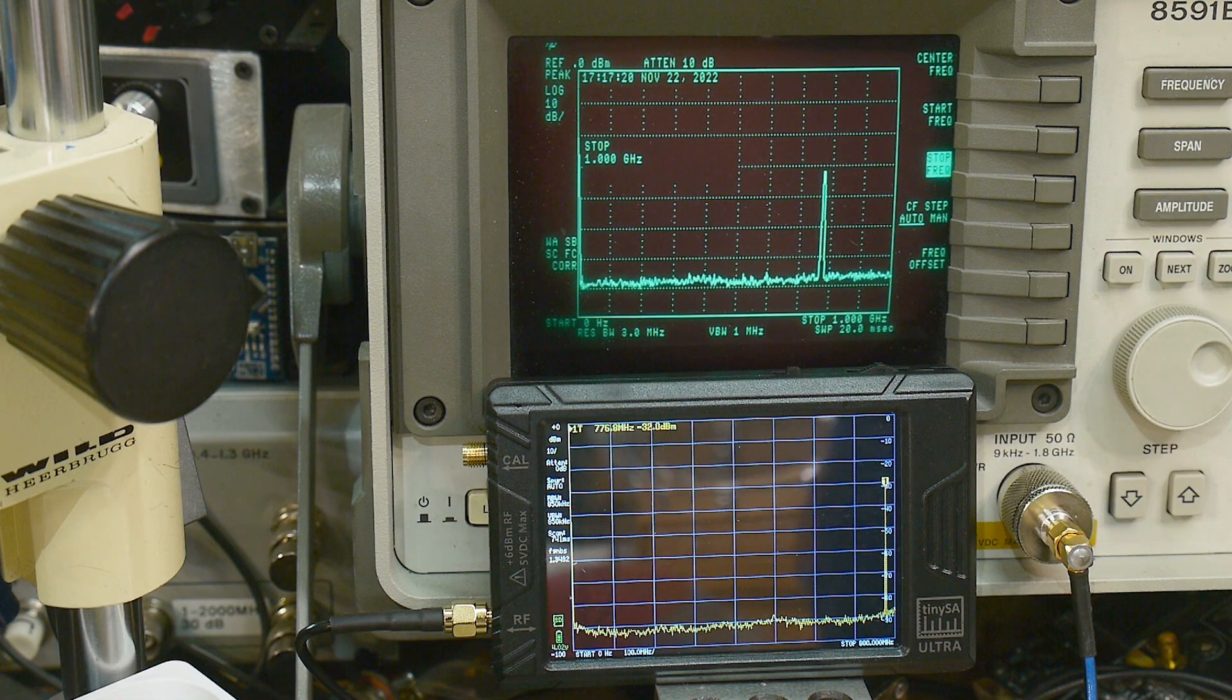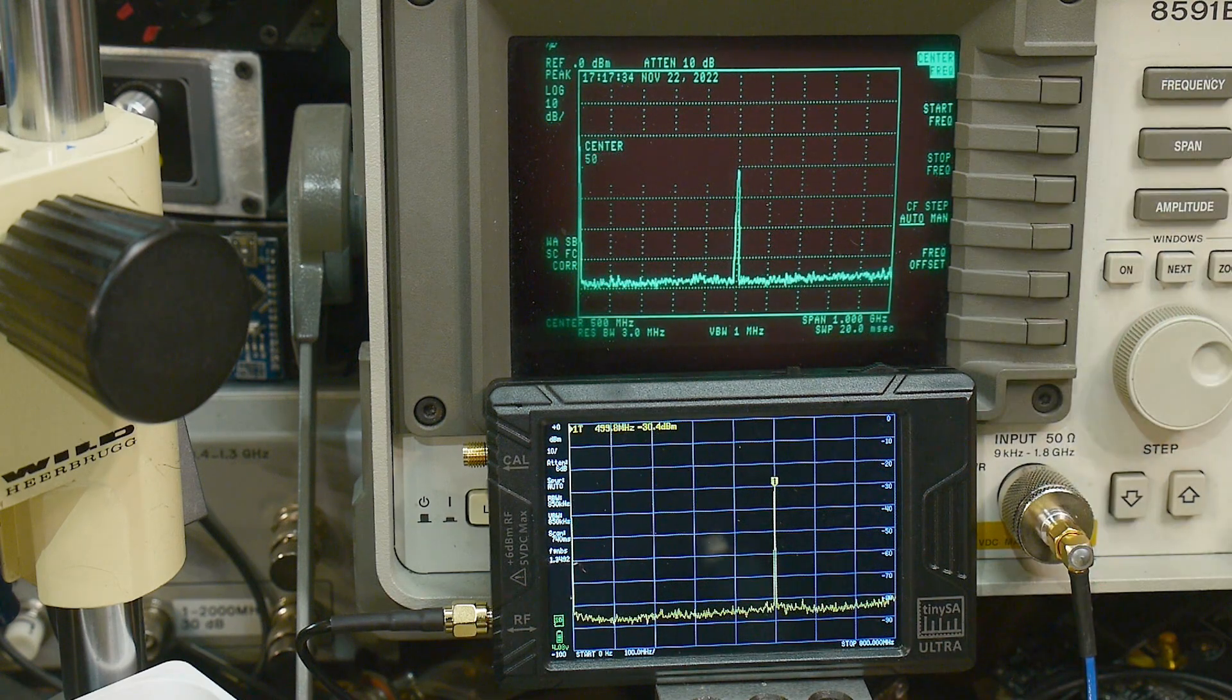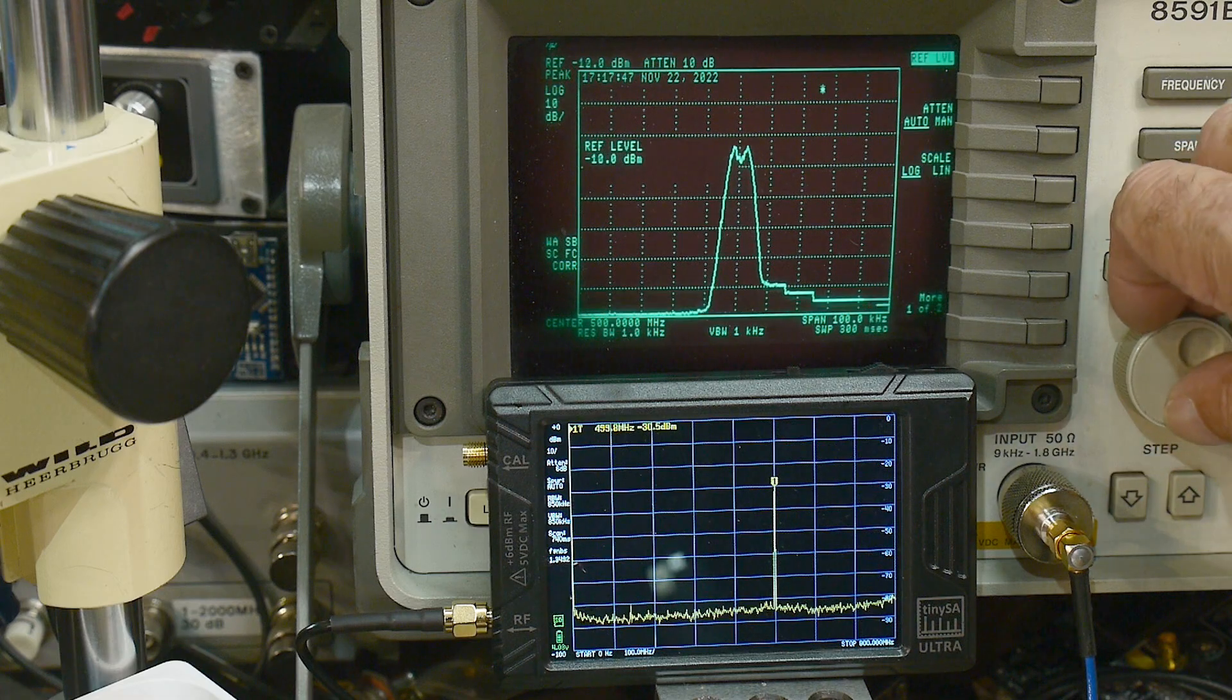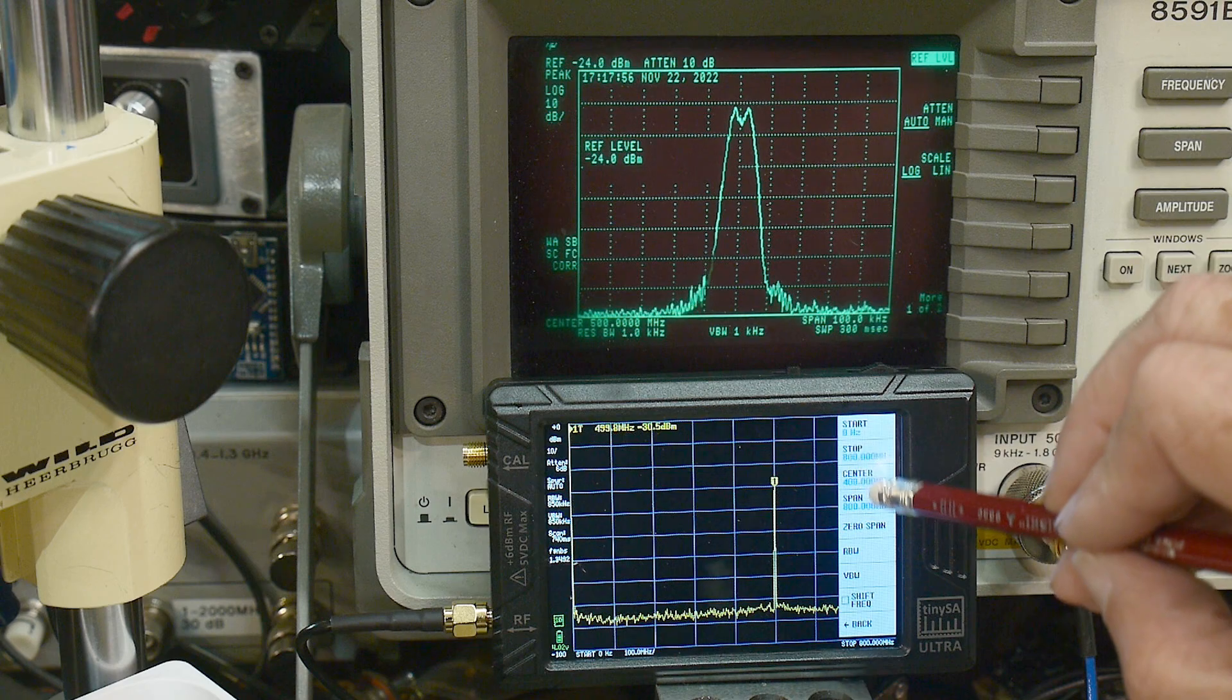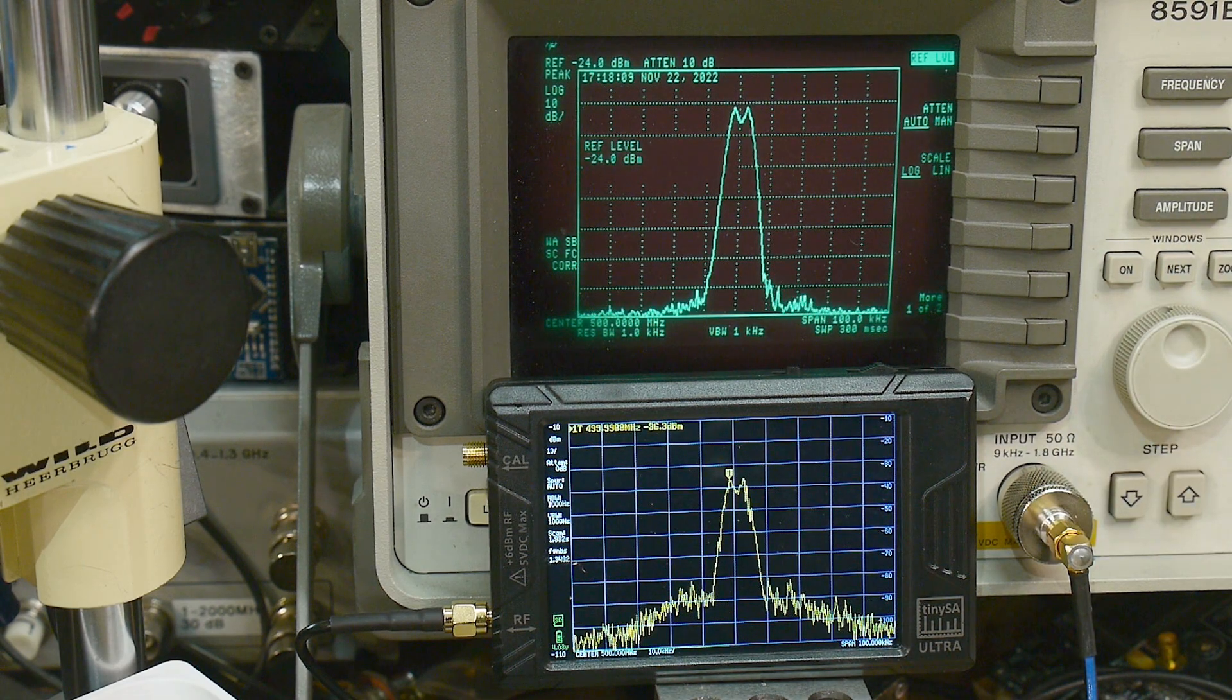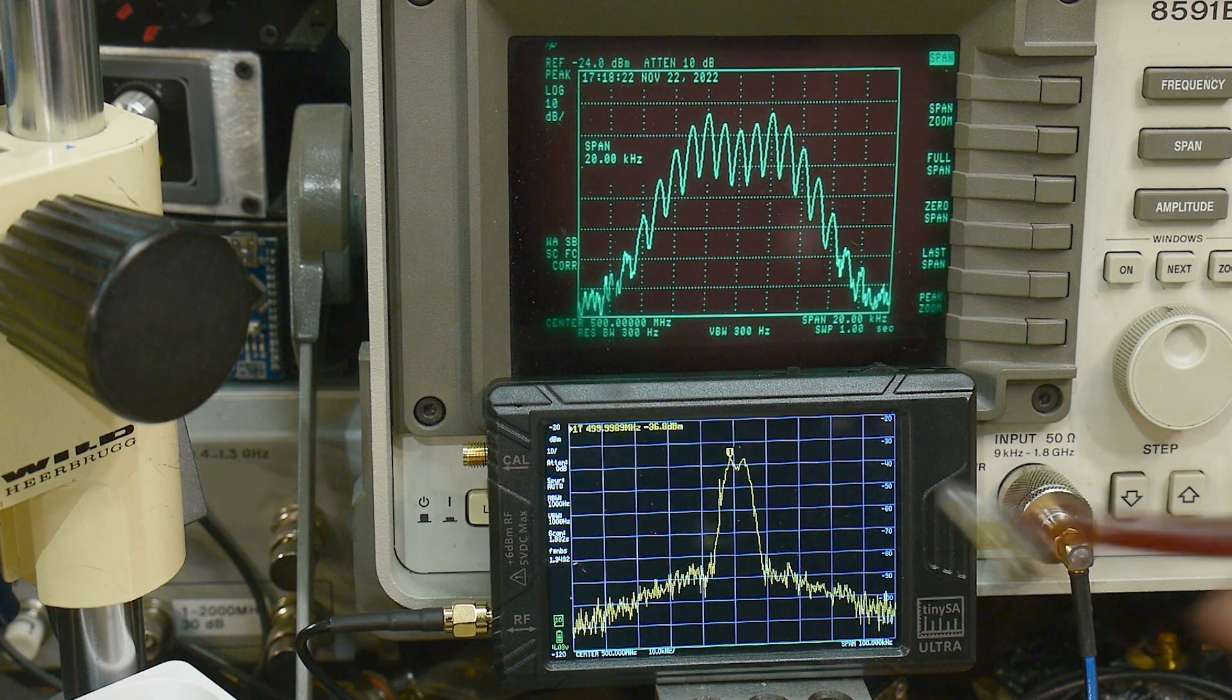Let's zoom in on that frequency - center 500 megahertz and span 100 kilohertz. We see that we have some modulation on it, actually FM modulation. We'll zoom in here a little bit later. Down here we'll do frequency center 500 megahertz and 100 kilohertz.